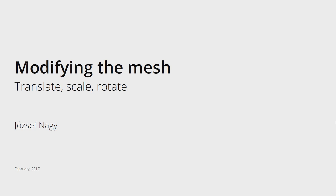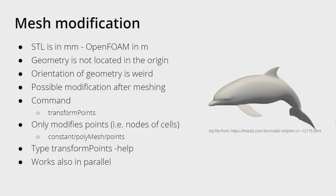Everyone, this is Jozef Noc here, and today I'm bringing you a short tutorial on the pre-processing tool of OpenFOAM called transformPoints, which you can use for a couple of things like translating your mesh, scaling your mesh, or rotating your mesh. You might already know this tool for scaling from meters to millimeters or millimeters to meters. For this tutorial I downloaded an object file of a dolphin and created a snappyHexMesh with it.